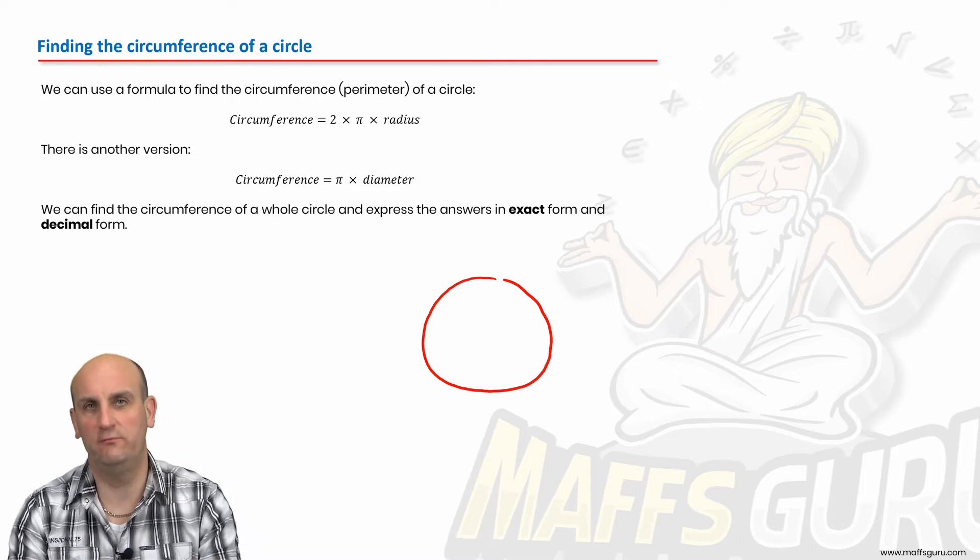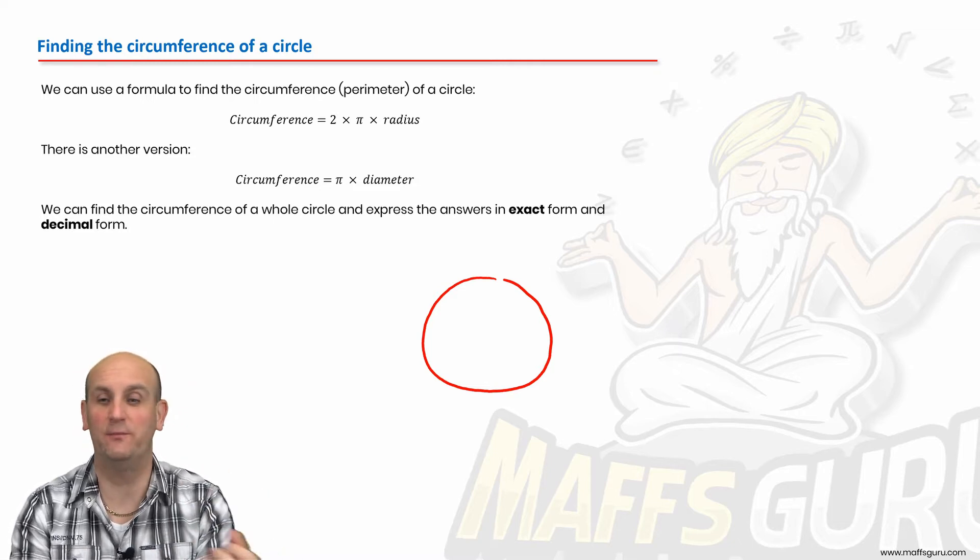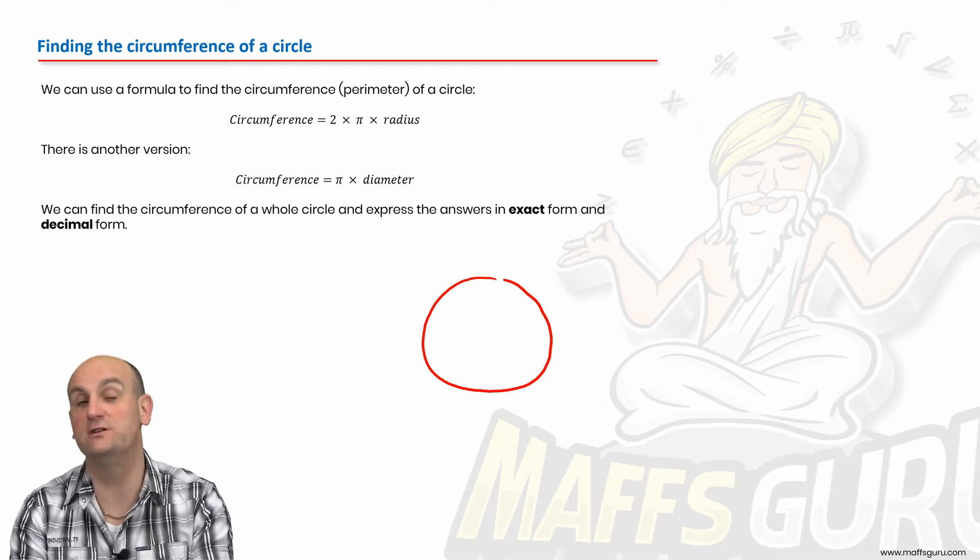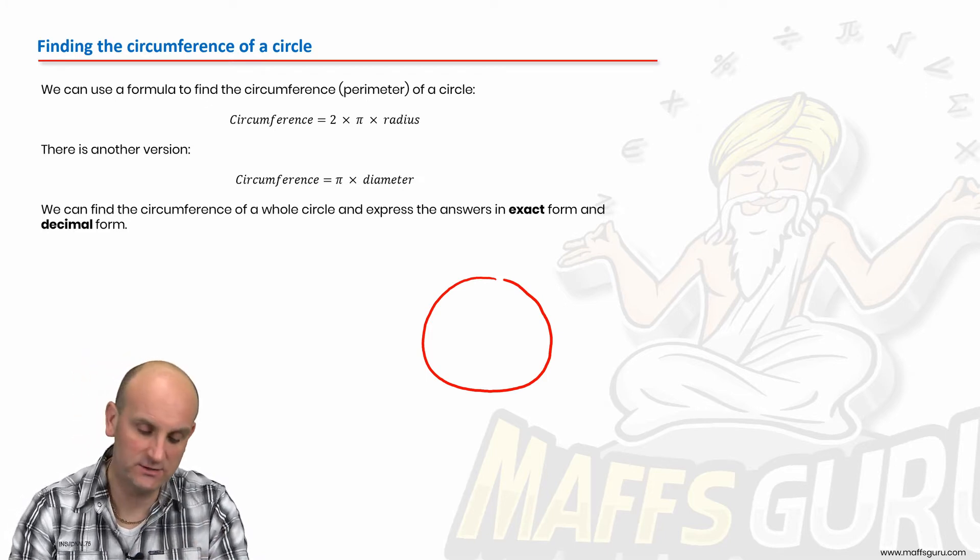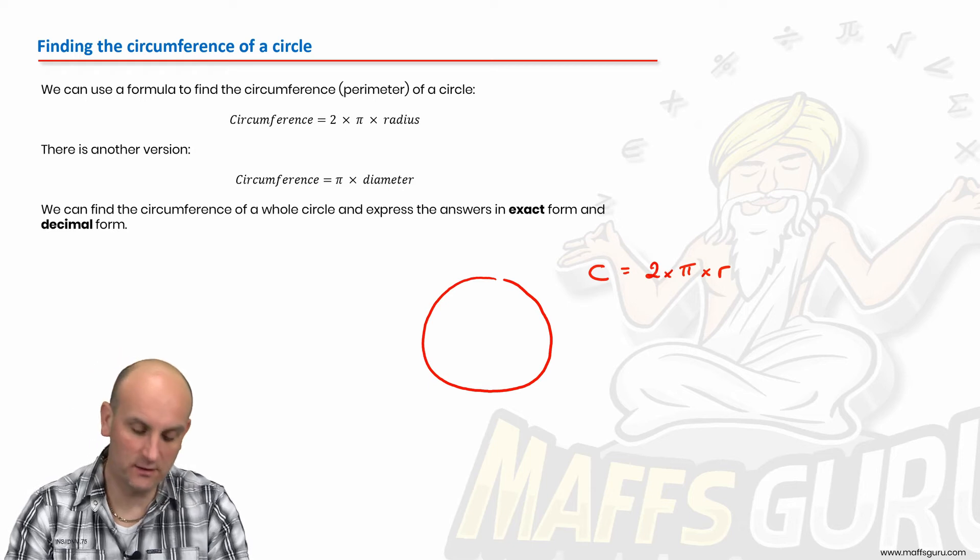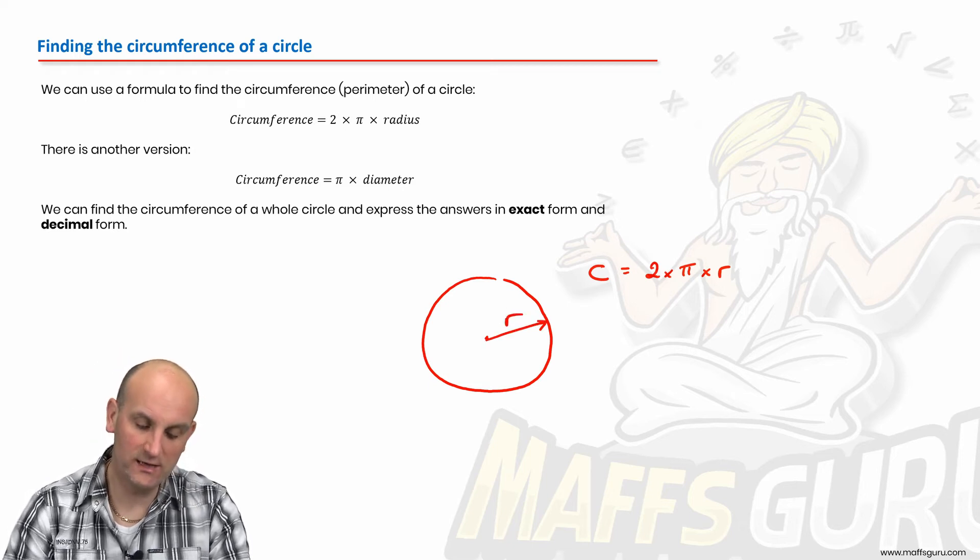Formulas in maths are really important. Sometimes they're critical. They help us shortcut a load of stuff. Other times not so helpful because they actually stop us from thinking. But in this situation, our circumference can be given by two times pi times the radius of the circle. So the radius is from the center to an edge.